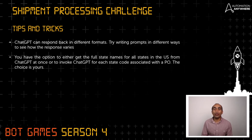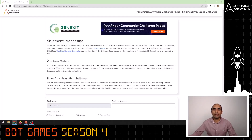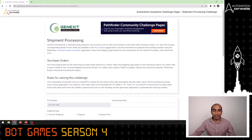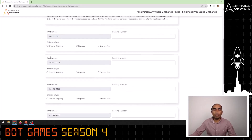Or you can invoke ChatGPT for every state code and get the state name individually — the choice is yours, use whichever you prefer. Let's look at the complete workflow. Here is the shipment processing challenge page.